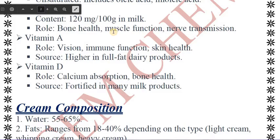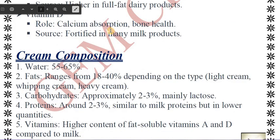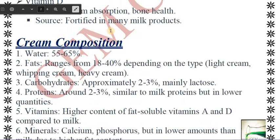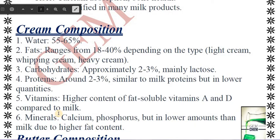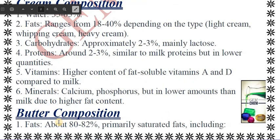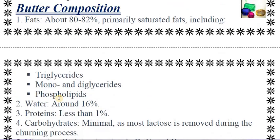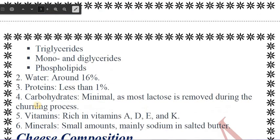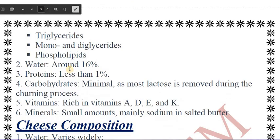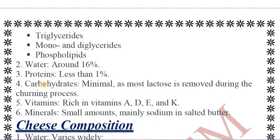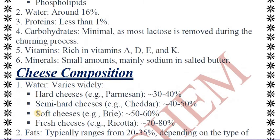Now if we talk about dairy products, that includes cream — the composition of cream is discussed here for your knowledge. Next is butter; butter composition contains fats, with types of fats mentioned. Butter also contains water, proteins, carbohydrates, vitamins, and minerals.